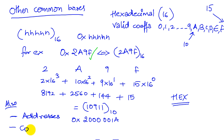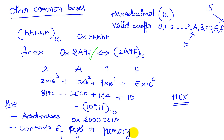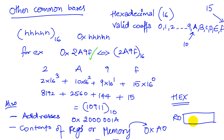Hex can also be used to represent contents of registers or memory — we will look at what registers and memory are at a later time. For example, the content of a memory location might be 0xA0. Or the content of register R0 can be represented as containing the value 0xFFFF1011.